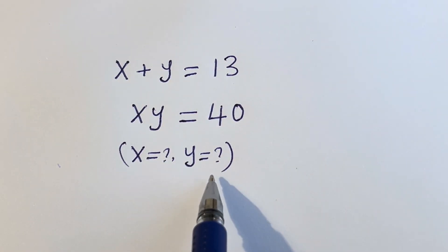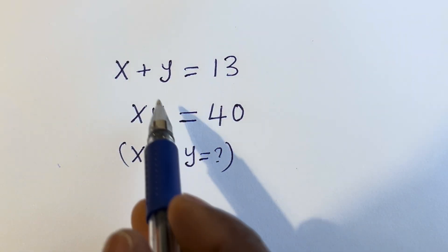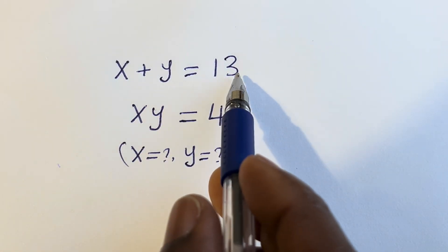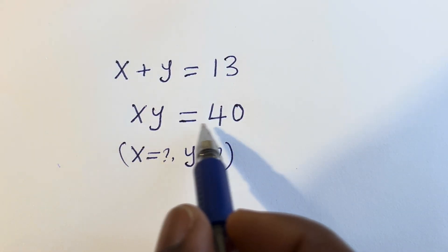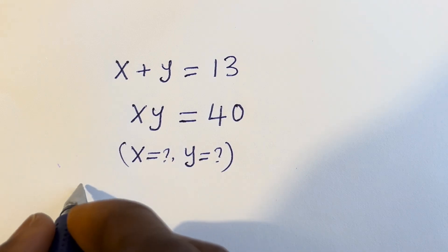Hello. How to solve for S and Y in this equation: S plus Y is equal to 13, and S times Y is equal to 40.